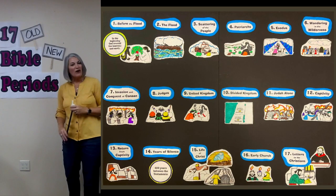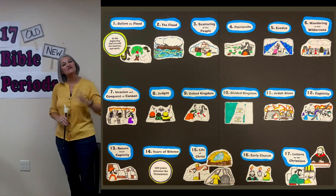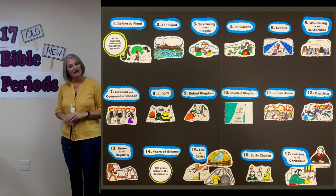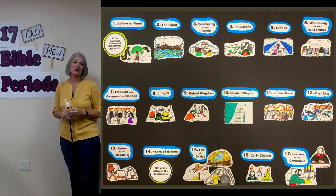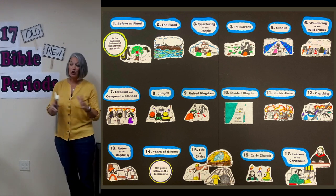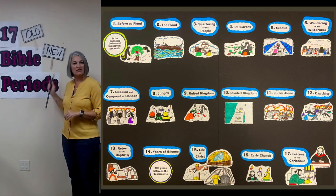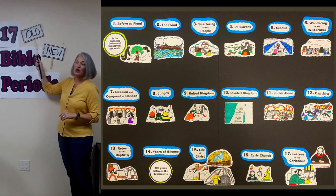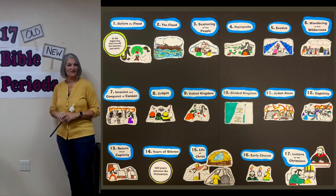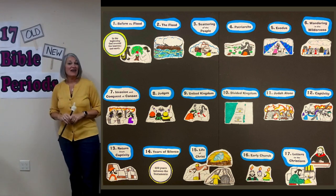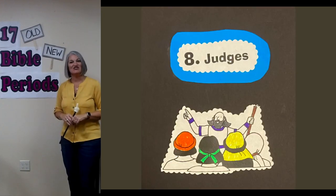Do you remember Hannah who prayed and prayed and prayed for a baby boy? She named him Samuel, and she promised that if she had this baby she would dedicate him to God and he would work in the house of God. She brings him to live with Eli the high priest to learn the ways of the house of God. That's an Old Testament story, and here's a hint: Samuel grows up to be a judge — so that's during the period of the judges.